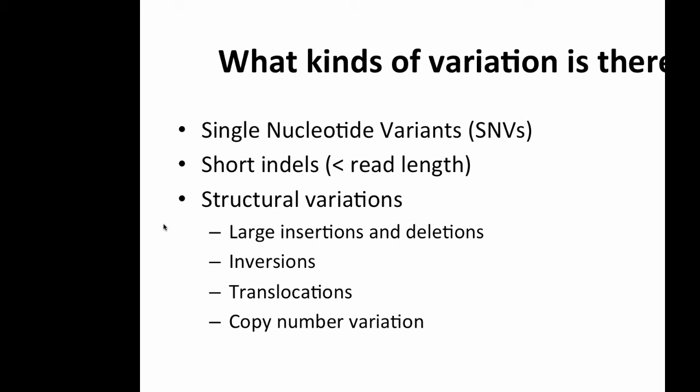Welcome back. This part of the module covers structural variation — specifically how to find it. Other parts of this course cover single nucleotide variants and short indels. Structural variation refers to very large-scale changes to chromosome structure: large insertions and deletions where large amounts of sequence have been added or deleted, inversions where an entire stretch of genome has been flipped, translocations where material has been swapped between chromosomes, and copy number variation. Copy number variation will be covered separately tomorrow morning.